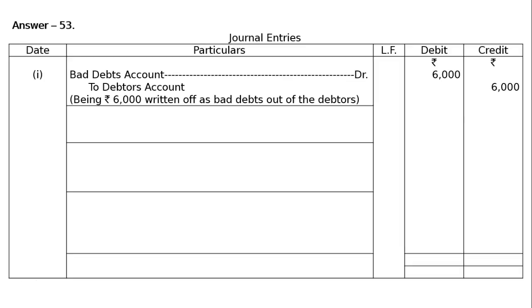The second entry is: Provision for Doubtful Debts account debited Rs.6,000 to Bad Debt account Rs.6,000 — being bad debt adjusted against provision. The provision of Rs.8,000 was made last year because there may or may not be bad debts. Now, at the end of this year, Rs.6,000 became bad. This Rs.6,000 bad debt is to be adjusted from the provision for doubtful debts available at Rs.8,000 — hence, Provision for Doubtful Debts Dr Rs.6,000 to Bad Debts account Rs.6,000.